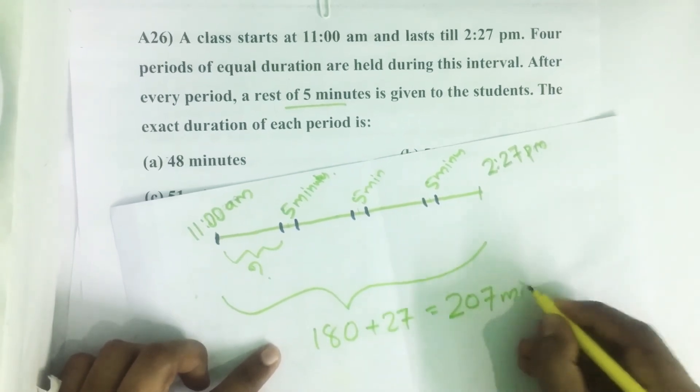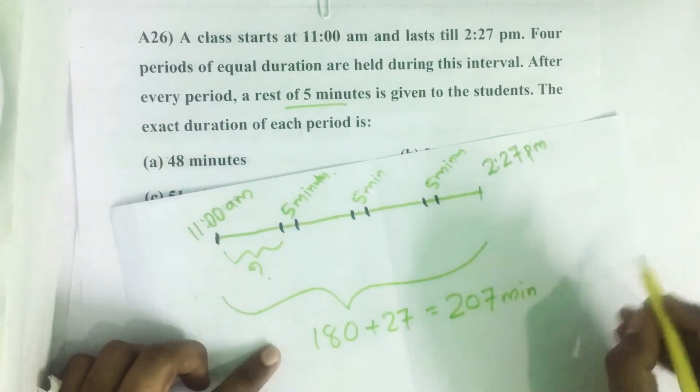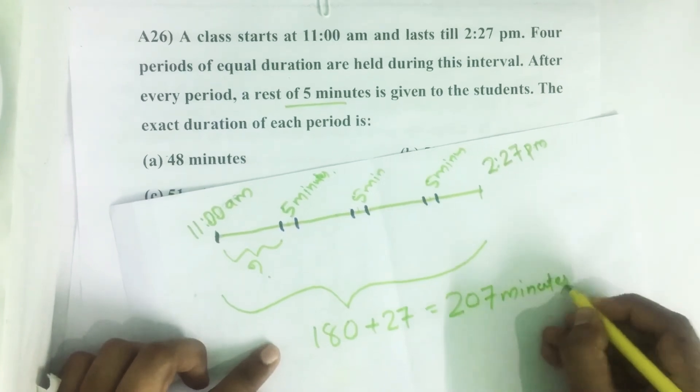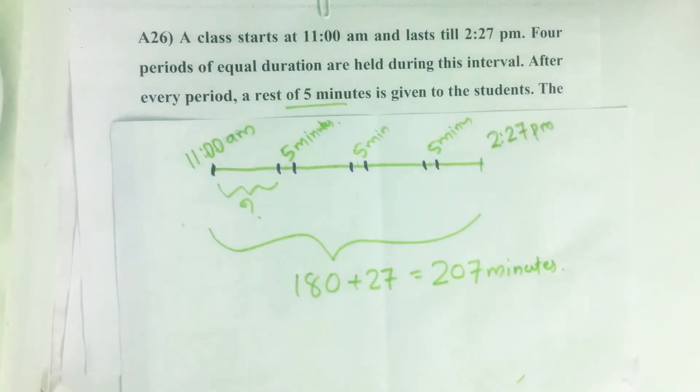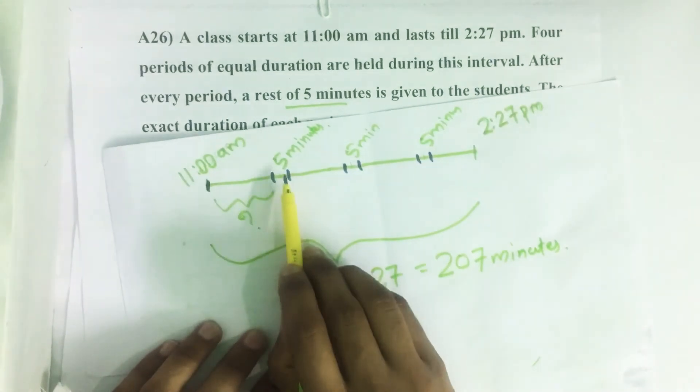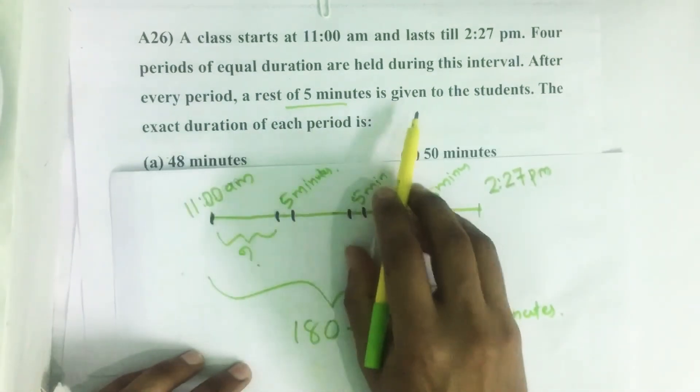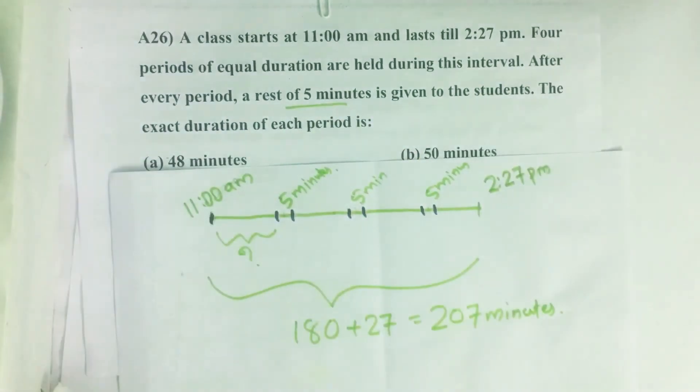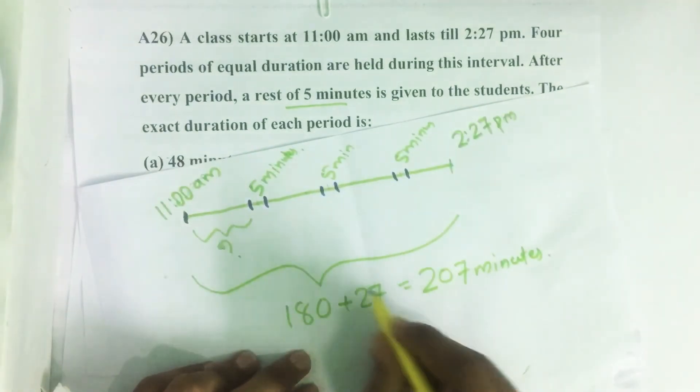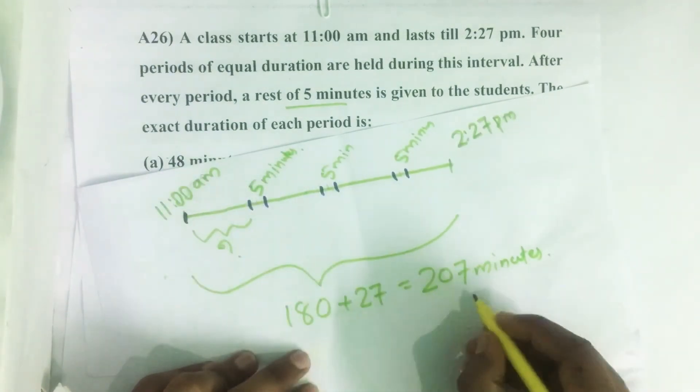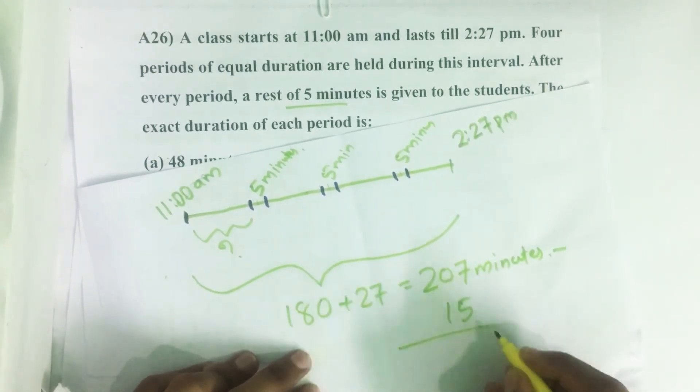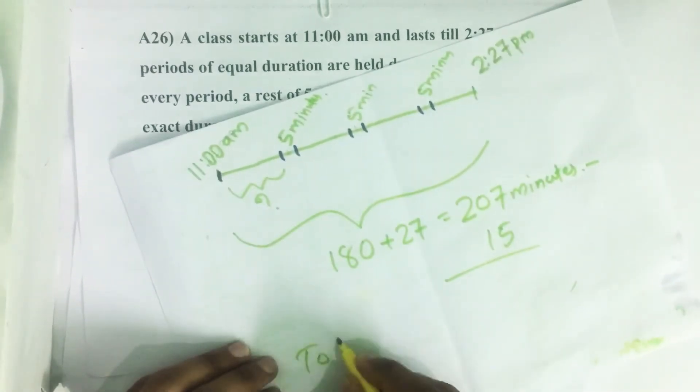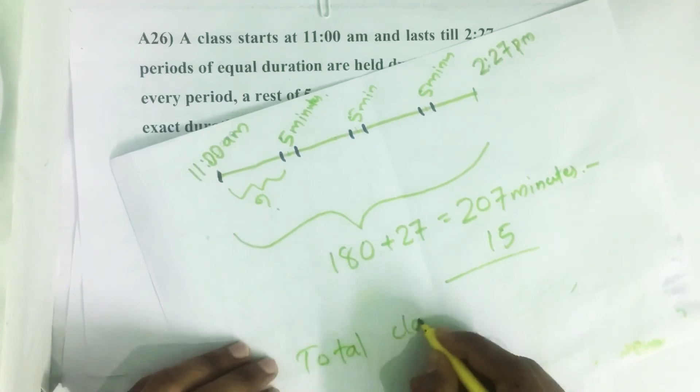The total duration of the class is 207 minutes, out of which 15 minutes is lost as interval. Then 207 minus 15, we get total class time.